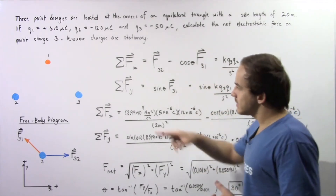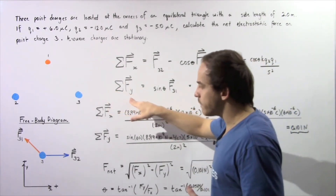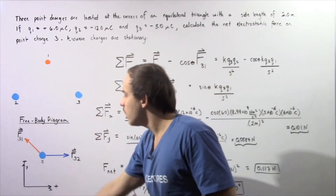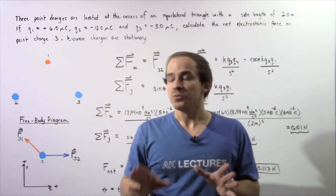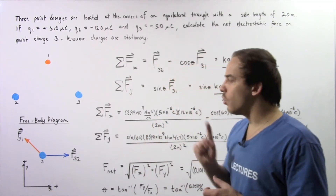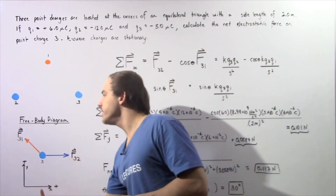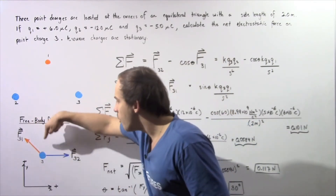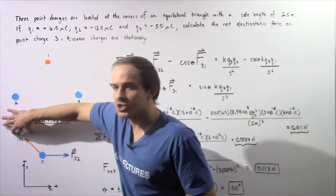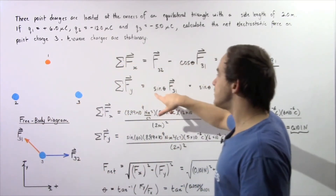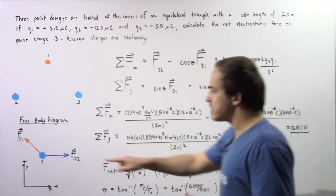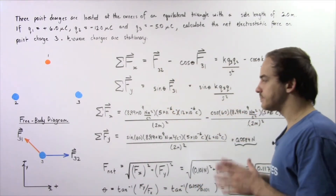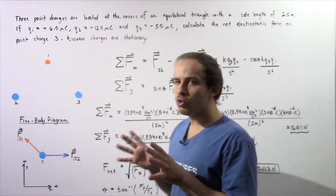Now let's calculate the sum of the forces acting on point charge three along the y-axis. We have one force along the y-axis and it points upward, so it's positive. This force is the y-component of F31, which equals sine of the angle theta multiplied by F31.